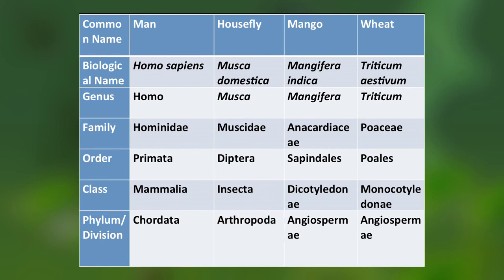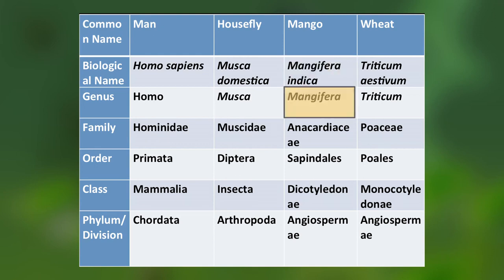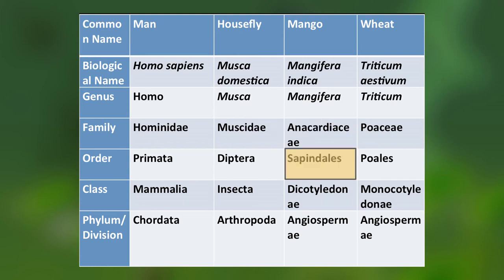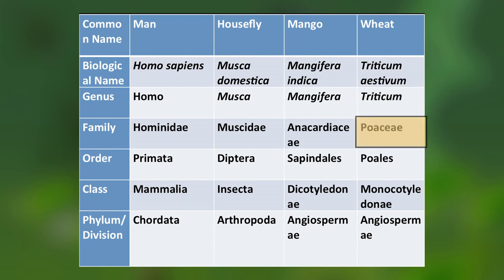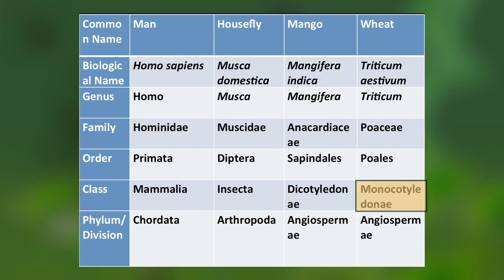For mango: common name mango, biological name Mangifera indica, genus Mangifera, family Anacardiaceae, order Sapindales, class Dicotyledonae, phylum Angiospermae. For wheat: biological name Triticum aestivum, genus Triticum, family Poaceae, order Poales, class Monocotyledonae, division Angiospermae.